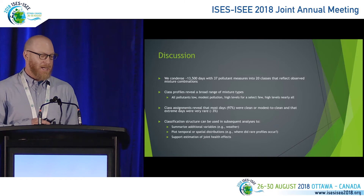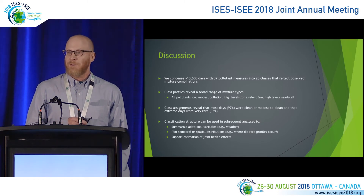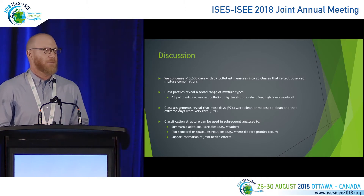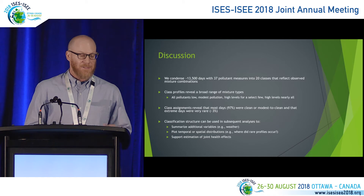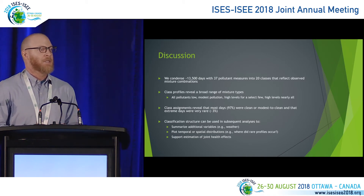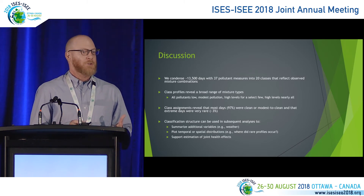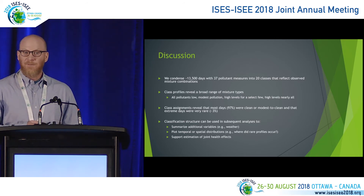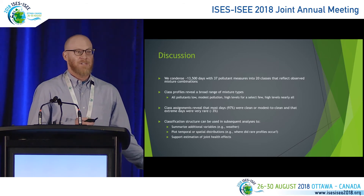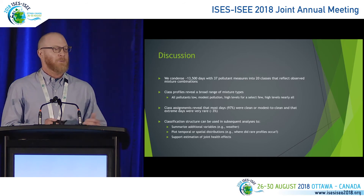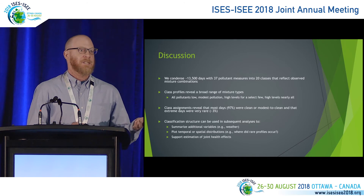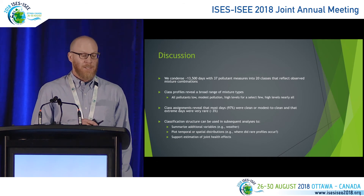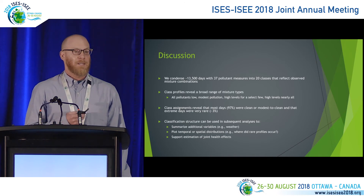In closing, we've condensed over 13,000 days with 37 pollutant measures to 20 representative types. The class profiles reveal a broad range of mixture types, ranging from very clean days to very polluted days. The class assignments reveal a somewhat lopsided frequency distribution — most days being clean or low pollution, with much more rare high pollution days. The classification structure can be used in subsequent analyses to characterize potential confounders, plot temporal or spatial distributions of profiles, and support estimation of joint health effects.